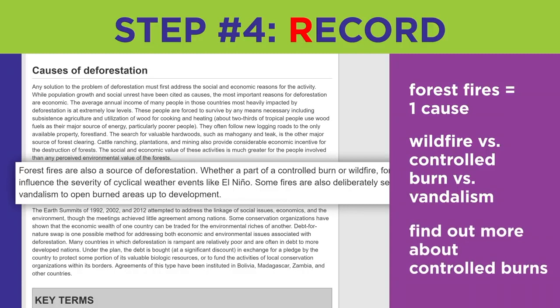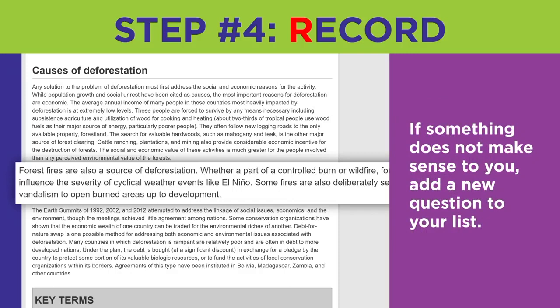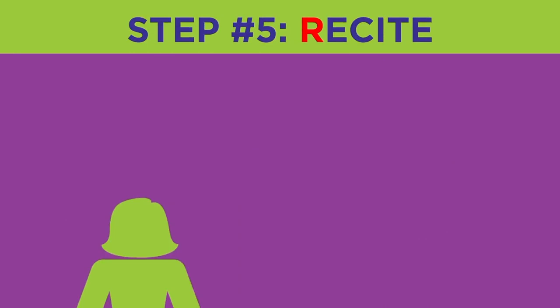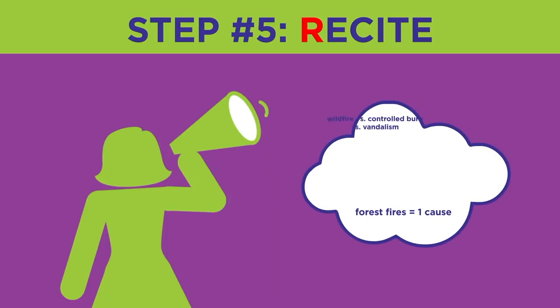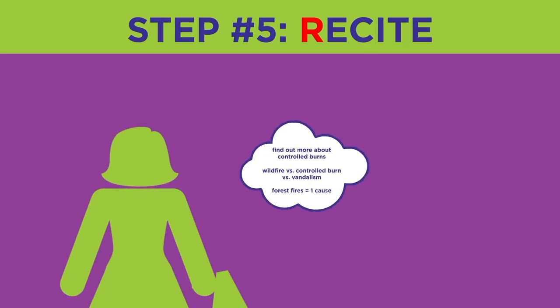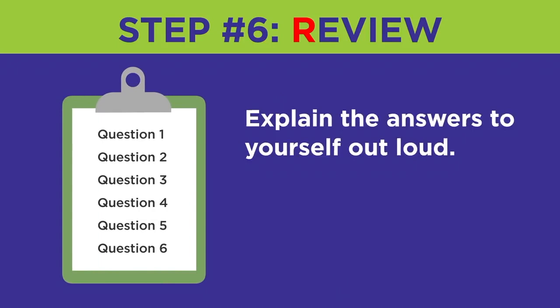When you finish each section of the text, recite your notes by reading them out loud. Reciting your notes will make connections in your brain between what you already know and what you're reading. This helps you retain the information for use later. After you finish a few sections of the chapter or article, look at your questions and try to answer them. Can you? Explain the answers to yourself out loud — this will reinforce the connections you made in the recite step.